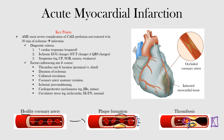In review: acute MI is the most severe complication of coronary artery disease. When perfusion is not restored within 30 minutes of ischemia, infarction occurs. With an occluded coronary artery, if blood flow or oxygen supply is not restored, the tissue distal to the occlusion — supplied by that artery — becomes infarcted.